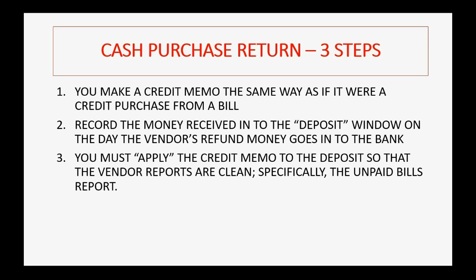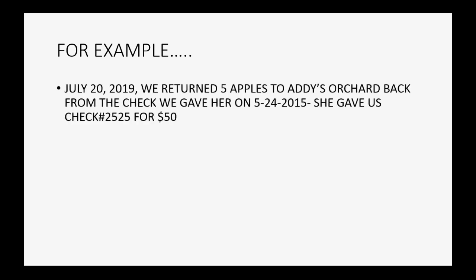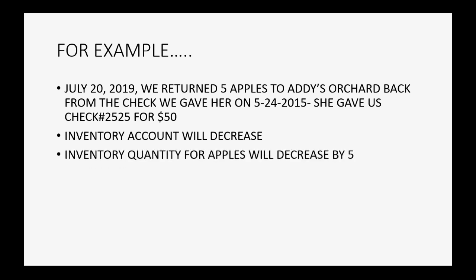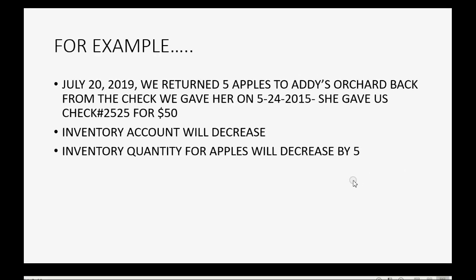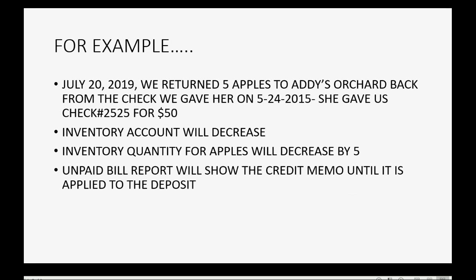The last step is to apply the credit memo to the deposit so the vendor reports are clean. Specifically, the unpaid bill report will show no evidence of this transaction because the deposit and credit memo cancel each other out, leaving the vendor's balance unchanged. For example, on July 20th of 2019 we returned five apples to Addy's Orchard — paid originally by check on May 24th, 2015 — and she gave us check number 2525 for $50. The inventory account and the inventory quantity for apples will decrease by five.